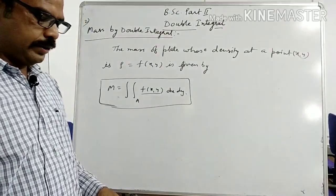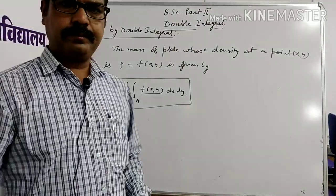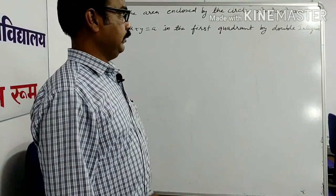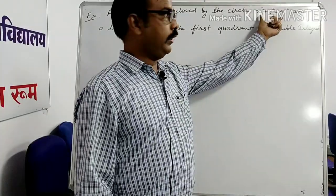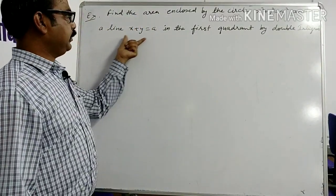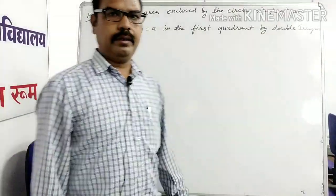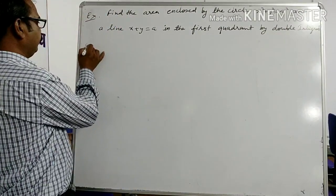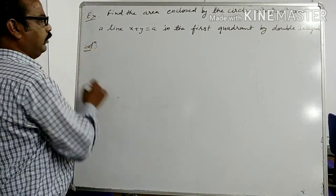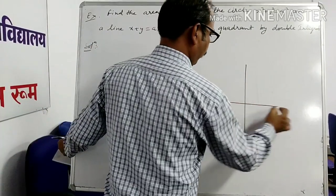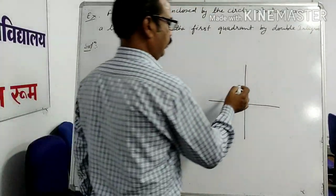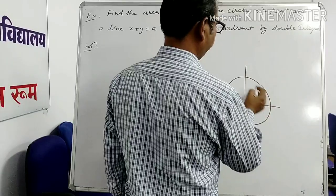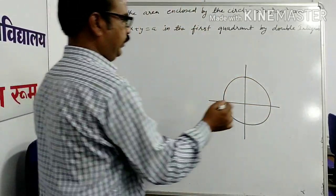We will now discuss some examples. The first example is: find the area enclosed by the circle x² + y² = a² and the line x + y = a in the first quadrant by double integral. Before starting the problem, we will draw a circle whose radius is a and the line x + y = a.